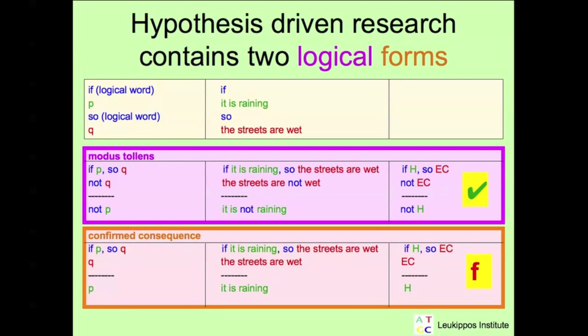This reasoning is false, because we easily can find contradictory examples. There are many possibilities why the streets could be wet. Somebody has washed the streets, the tube was broken and so on. So there are many reasons why the streets are wet. If we observe wet streets, we cannot conclude that it is raining.